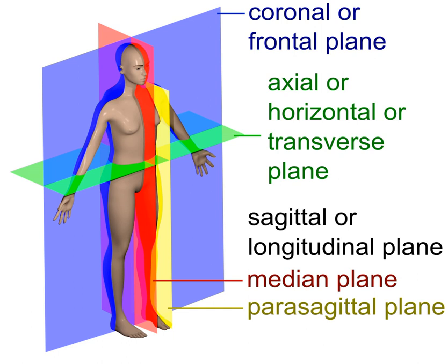Extension and flexion are the movements of limbs within the sagittal plane. Abduction and adduction are terms for movements of limbs within the coronal plane.